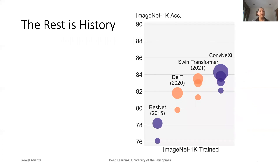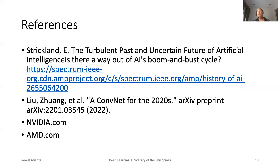After AlexNet, the rest is history. Today, it is not uncommon to achieve near 90% top-1 accuracy on ImageNet 1K. Note that deep learning is not just about performance or accuracy — it is actually a multi-faceted problem that includes efficiency and deployability considerations. Also note that deep learning is not all about image recognition or vision. Recall that AI is about perceiving the environment and making a decision in order to achieve a certain goal. In addition to what we discussed here, we have listed the references in this slide.